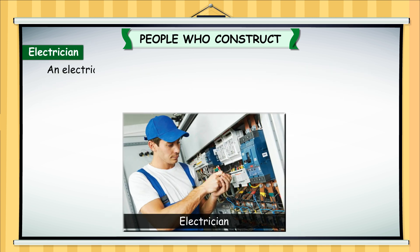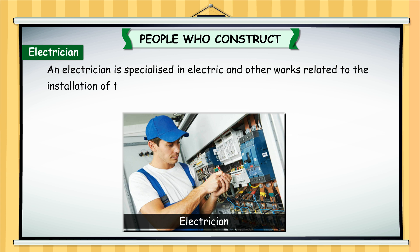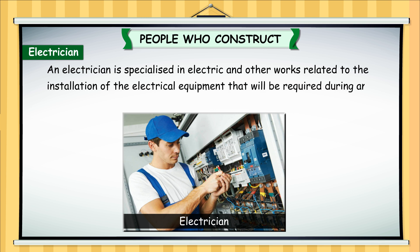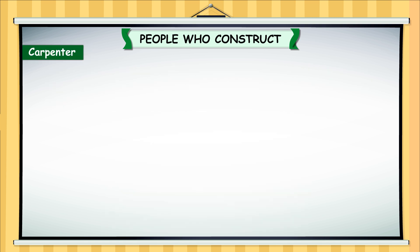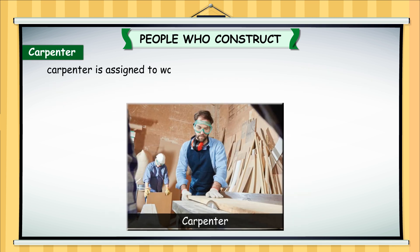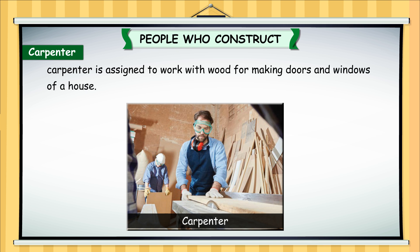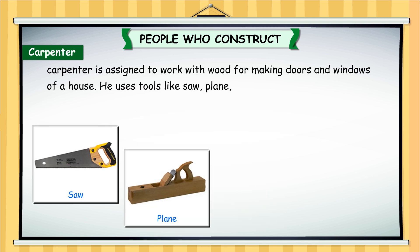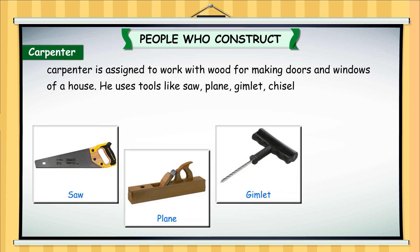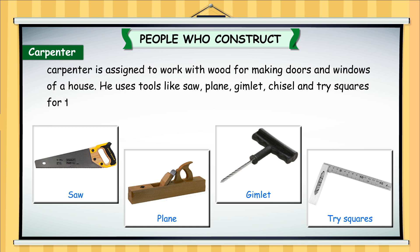An electrician is specialised in electric and other works related to the installation of the electrical equipment that will be required during and after the construction is complete. A carpenter is assigned to work with wood for making doors and windows of a house. He uses tools like saw, plane, gimlet, chisel and tri-squares for this work.